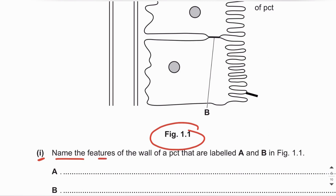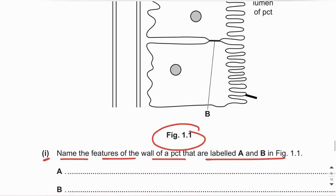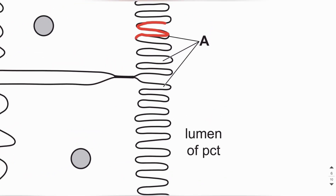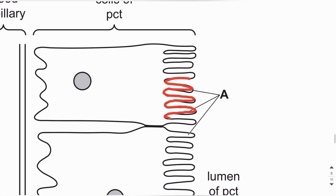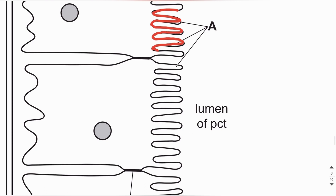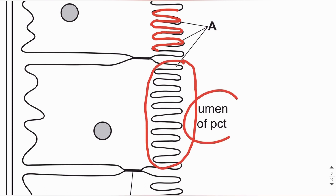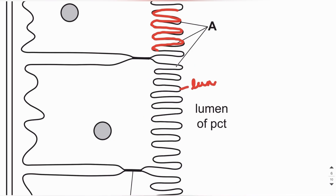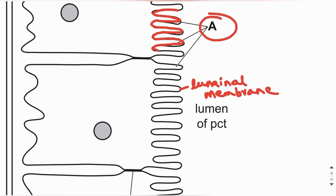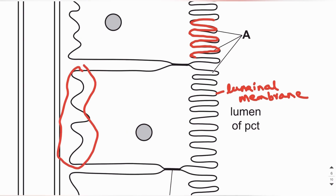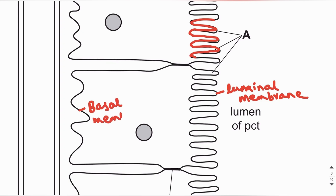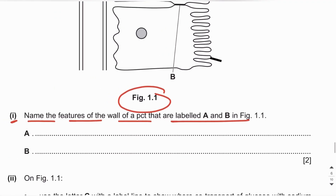Part one: name the features of the wall of the PCT labeled A and B in figure 1.1. Feature A is microvilli. The proximal convoluted tubule cells have two types of membranes — the luminal membrane, which faces the lumen of the PCT, contains finger-like projections called microvilli. Microvilli are also known as the brush border.